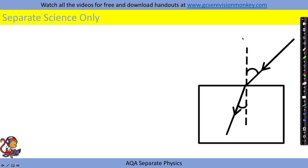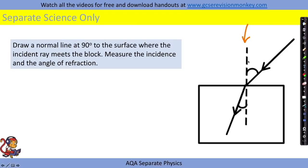Just like we did in our reflection diagrams we need to draw a normal line at 90 degrees to the surface where the incident ray meets the block. So this is the incident ray going in.